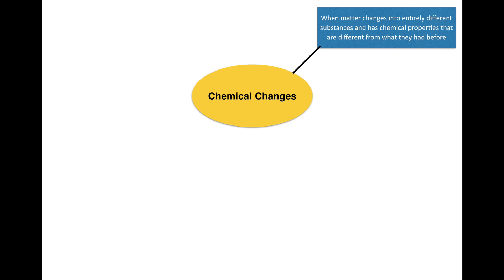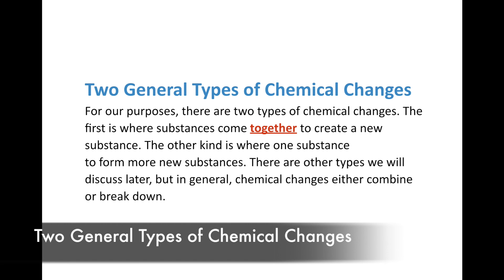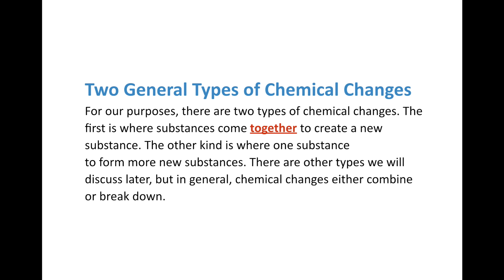Now that we have that, let's continue. Make sure you write that definition. After that, we need to talk about two general types of chemical changes. For our purposes, there are two types — though there are several more covered in high school or later in this class. The first type is when substances come together to create a new substance. For instance, baking soda and vinegar come together and create carbon dioxide. The second type is when one substance breaks apart to form new substances.